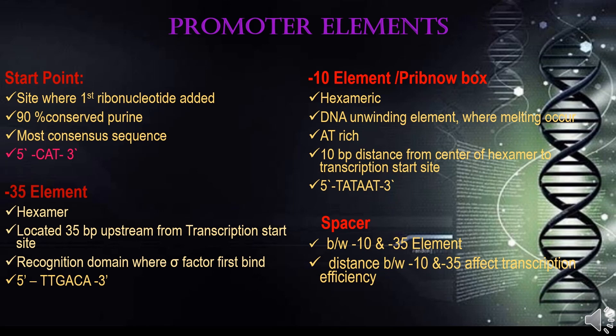The minus-10 element is otherwise known as the Pribnow box. It is also hexameric and is the site where DNA unwinding occurs, so it is also known as the DNA unwinding element. It is an AT-rich region, which allows unwinding to occur easily. As the name indicates, it is 10 base pairs from the center of the hexamer to the transcription start site, and its consensus sequence is TATAAT. The spacer is located between the minus-10 element and the minus-35 element, and the distance between them affects transcription efficiency.